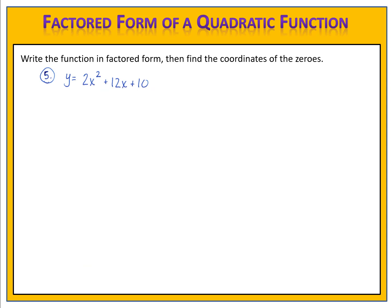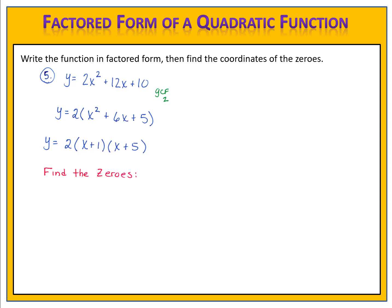What if we have a function that has a greatest common factor? Here we have y equals 2x squared plus 12x plus 10. We have a greatest common factor of 2, so we begin by factoring that out. Then we factor the trinomial in the parentheses. The final factored form is y equals 2 times x plus 1 times x plus 5. Now when finding the zeros, we take each factor and set it equal to zero — but 2 equals zero makes no sense, so there's no x-intercept to find there.